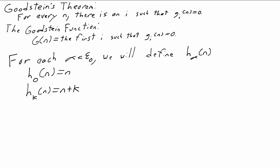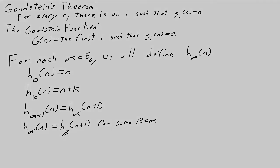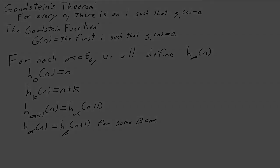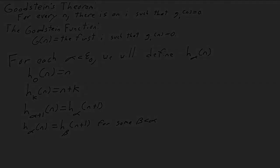What should happen is that each time we add 1, we should decrement the ordinal alpha. So h_{alpha+1} of n will be h_alpha of n plus 1. And more generally, when alpha is a limit ordinal, we want h_alpha of n to be h_beta of n plus 1 for some beta less than alpha. And we'll have to pick which ordinal beta is, and which ordinal beta is might depend on the value of n. So for each non-zero ordinal below epsilon 0, we pick a sequence of ordinals, which we call the fundamental sequence.